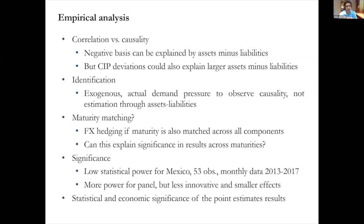Georgia tries to address identification using lags of the variables and checks whether the instrument is valid. But it's hard to isolate exogenous variation through lagged values alone. It would be better to find an actual exogenous source of demand pressure from banks that then moves the CIP, rather than relying on the difference between assets and liabilities, which I interpret more as an equilibrium condition than a source of exogenous variation.